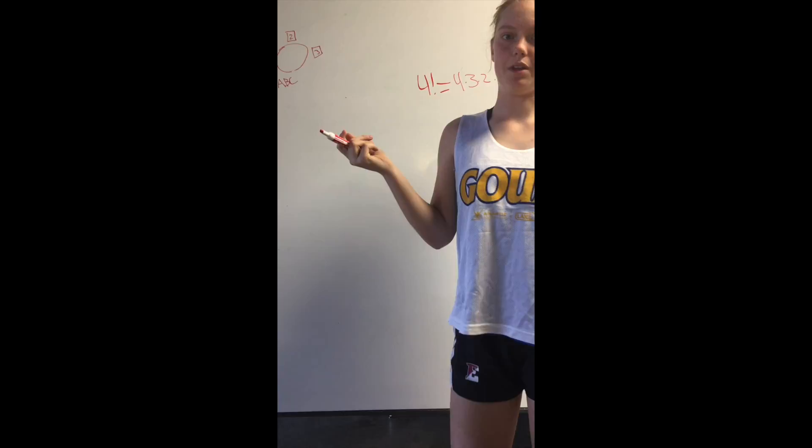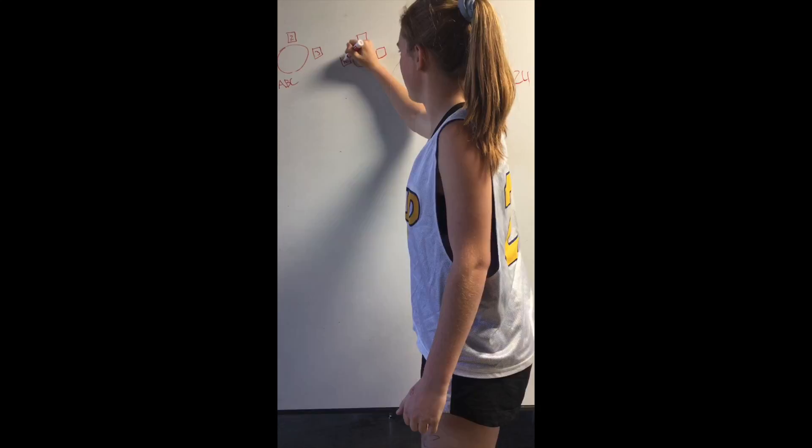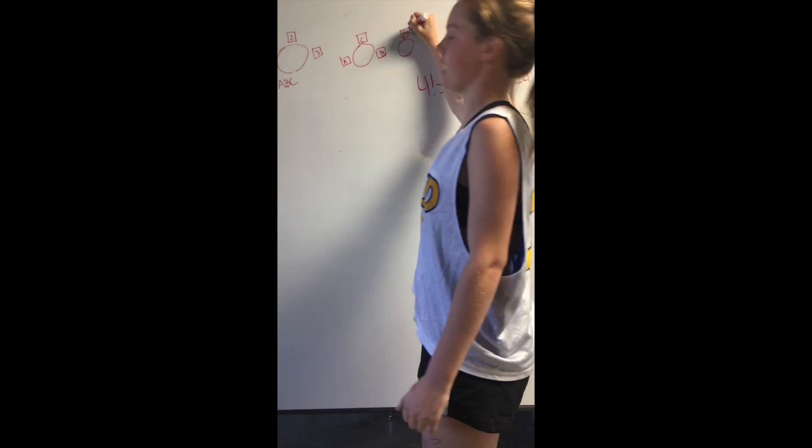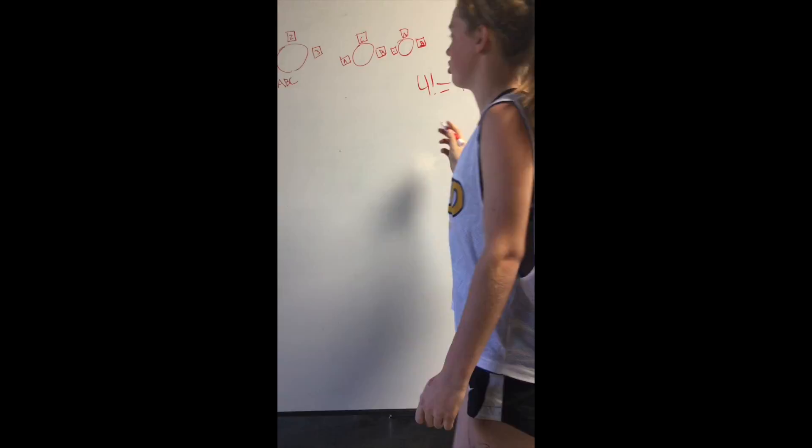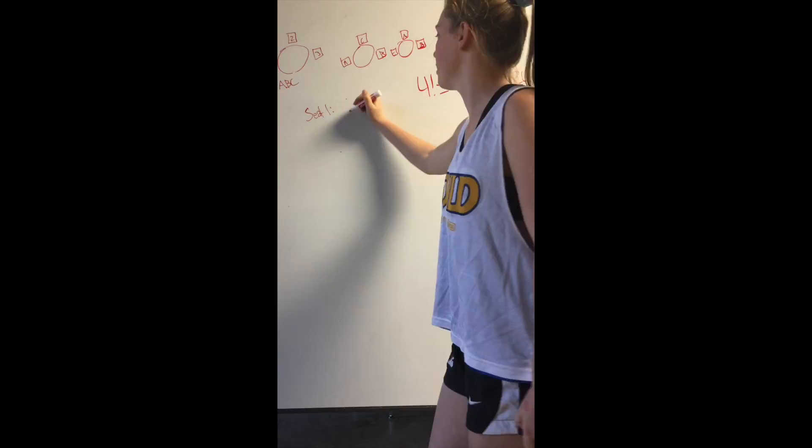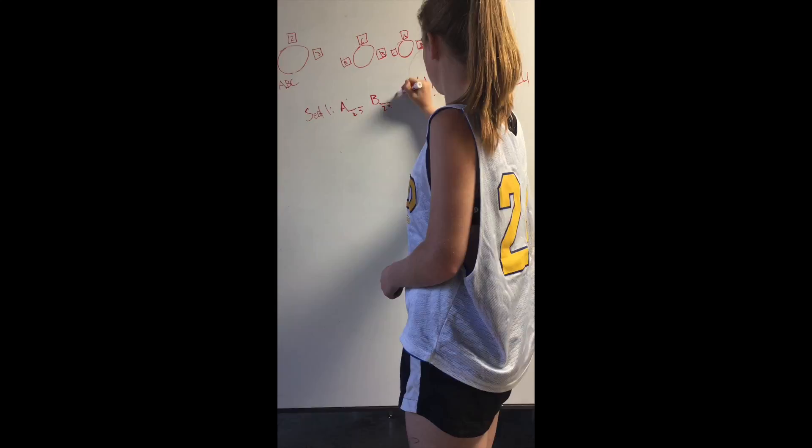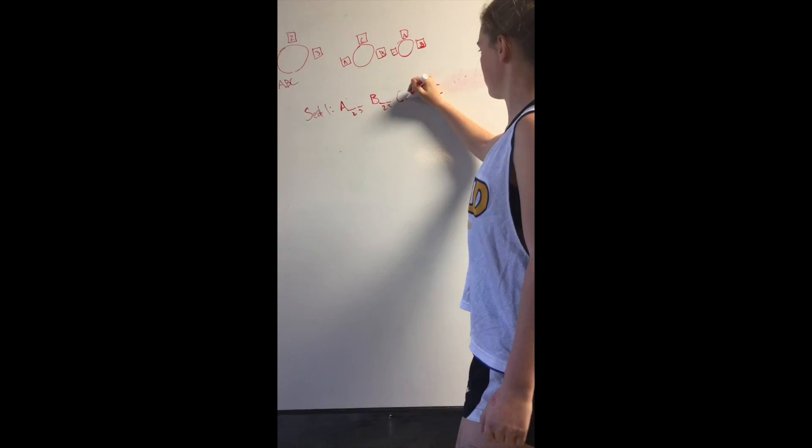To solve this, we could write it out and just keep making different combinations like this. We could have A here, B here, C there. We could have A at the top, B here, C there. Those are just two different combinations, so there could be many more.